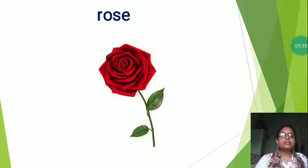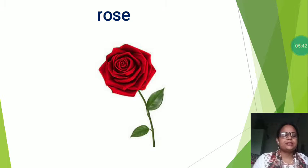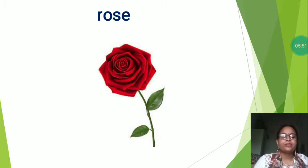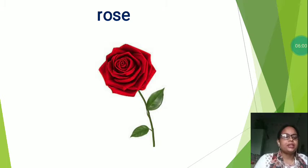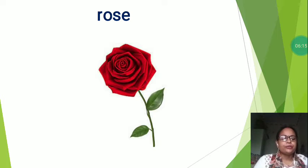So dear students, a rose is popularly known as the king of flowers. They come in different colors such as red, white, pink, yellow, etc. A rose plant has small and sharp thorns on its stem. The flower looks beautiful when it blooms in the garden. Rose is the symbol of beauty, love and compassion. The petals of a rose are soft and used in perfumes due to its fragrance. They are used for decoration in various ceremonies. You can find more than 100 varieties of rose flower.